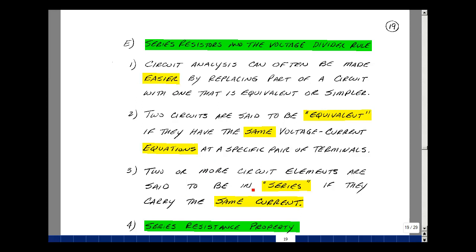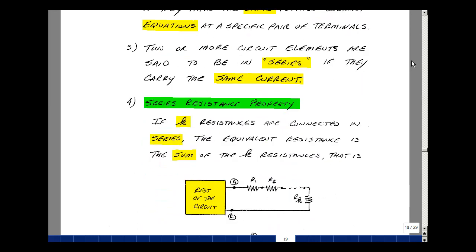Also, two or more circuit elements are said to be in series if they share the same current. This will lead us to our first property with series elements. If I have k resistances connected in series, the equivalent resistance is the sum of the k resistances. I'm showing that as a schematic.